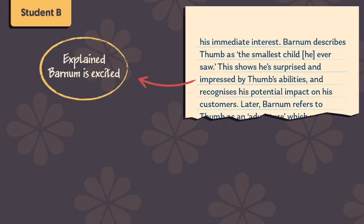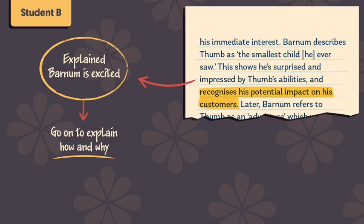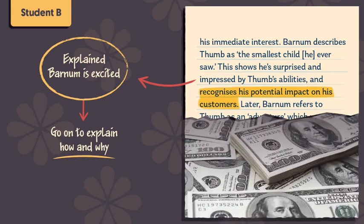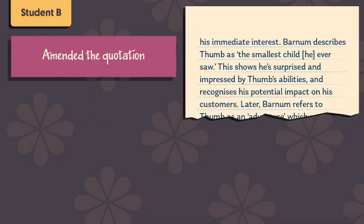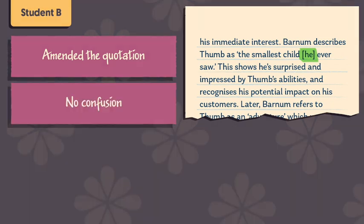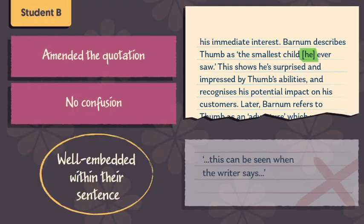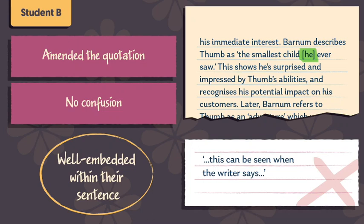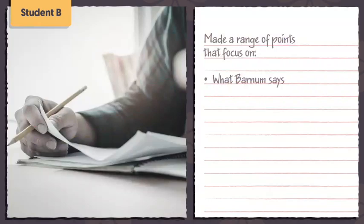Here, they've explained Barnum is excited because he's impressed. Instead of leaving the response there, they go on to explain how and why being impressed proves he's excited — specifically that Barnum recognizes his potential impact on his customers, meaning he's going to earn a lot of money. What's also noteworthy is the way this student amends the quotation: they change the pronoun 'I' to 'he' so that the quotation is clear and coherent, avoiding confusion that would arise if left as 'I' as it appears in the text. The quotation is also well embedded within their sentence, rather than introduced in a more clunky way such as 'this can be seen when the writer says.' This student has made a range of points focusing on what Barnum says and the language he uses to express his excitement.